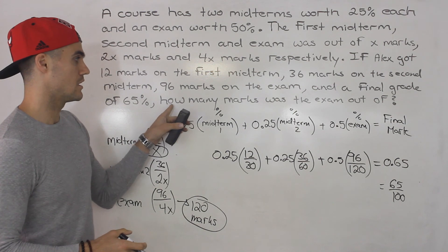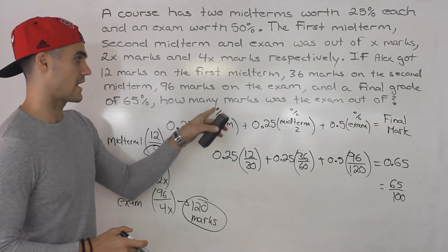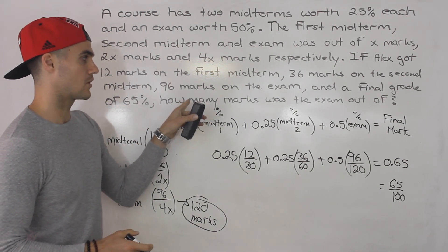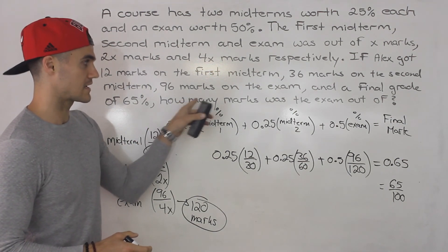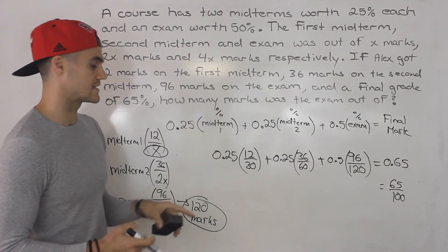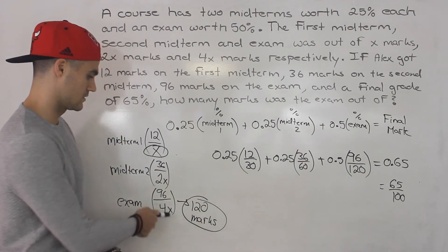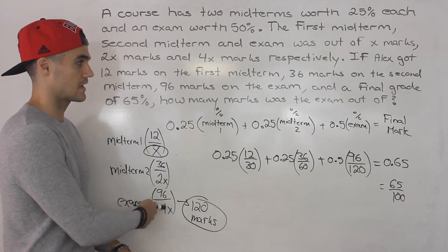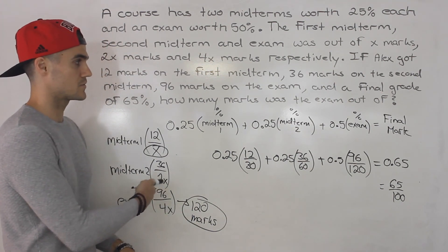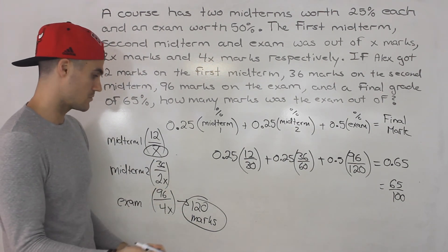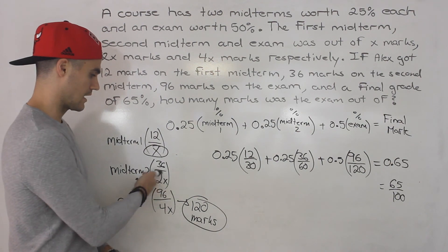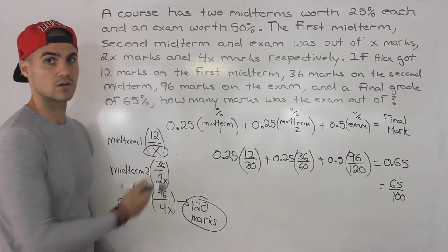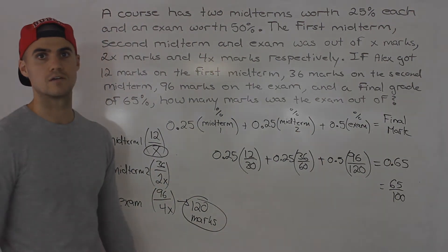Also be careful about what they're asking for. The question asks how many marks the exam was out of — the answer is 120. If they asked about the second midterm it would be 60, and for the first midterm it would be 30.